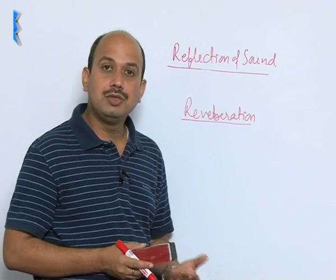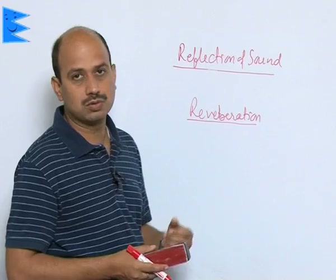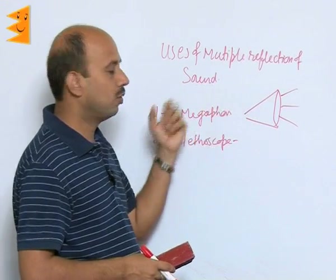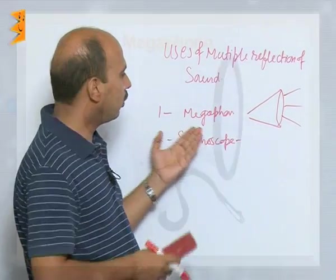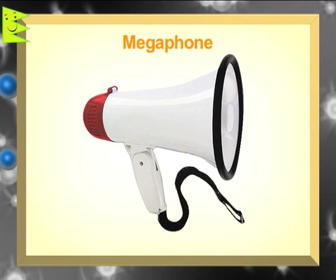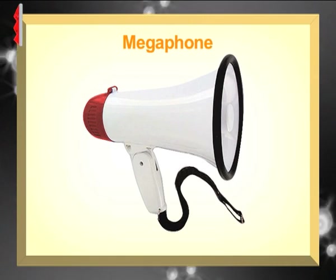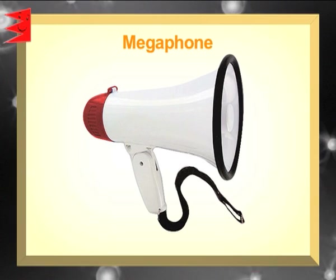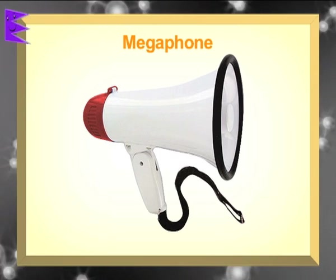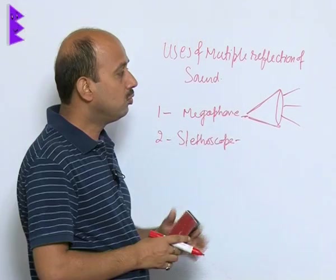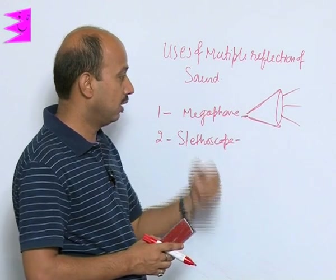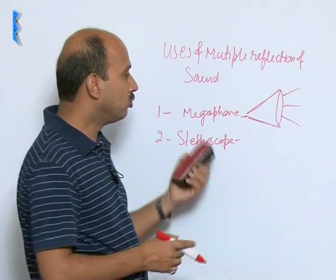Now we will see the uses of reflection of sound — uses of multiple reflections of sound. The first example is the megaphone. It is like a conical shape, where multiple reflections of sound take place and then the sound is directed to one side. This is an application of multiple sound reflections.